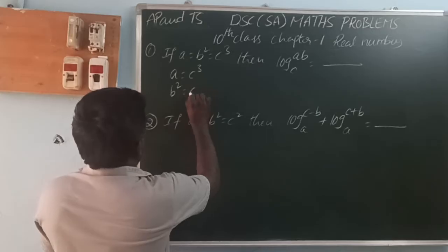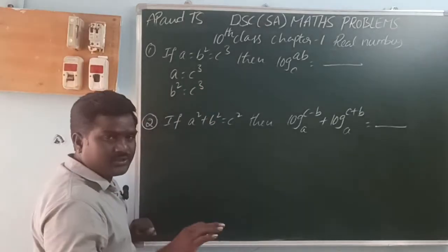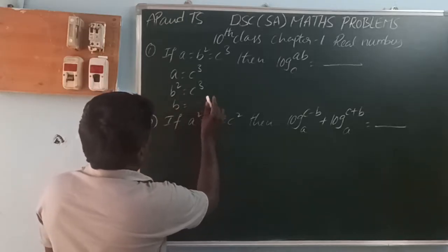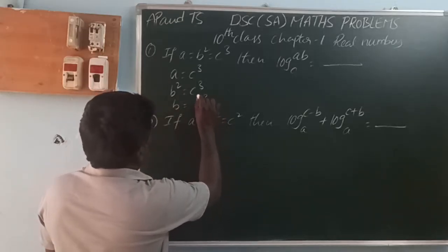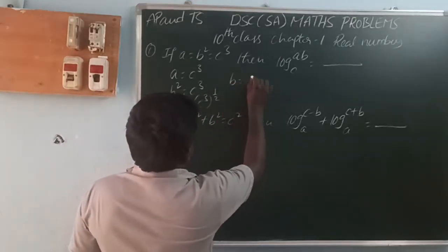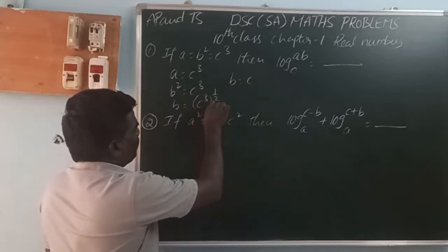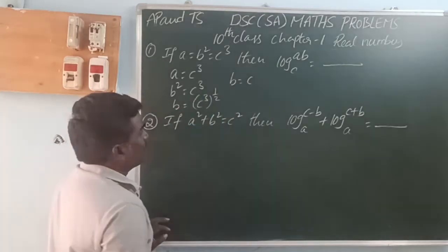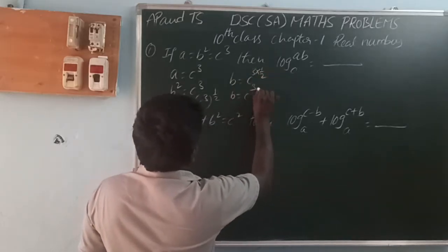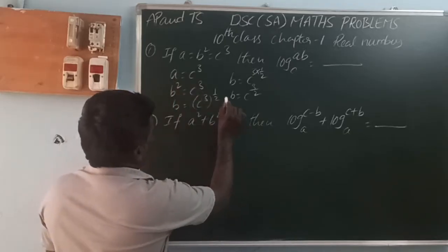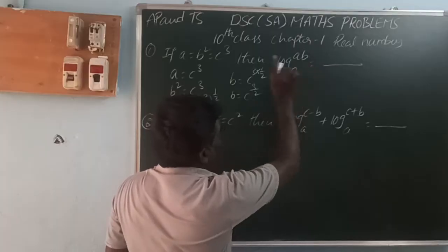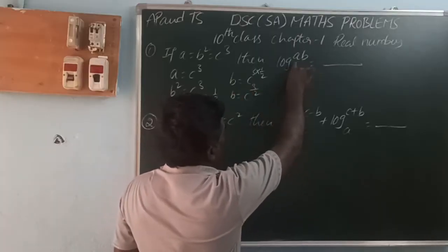Since b squared equals c cubed, we take the square root on both sides: b squared to the power 1/2, so b equals c to the power 3/2. Using the rule: a power m, all to power n equals a power m times n, so b equals c to the power 3 by 2.